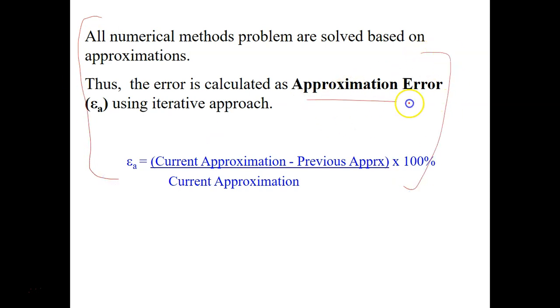We call it as approximation error, which you're going to use a lot of times in your calculations and when we go on with this course. So this approximation error is represented by this symbol here, EA, and you actually calculate this type of error using iterative approach. I will show you an example later on how you can do that.